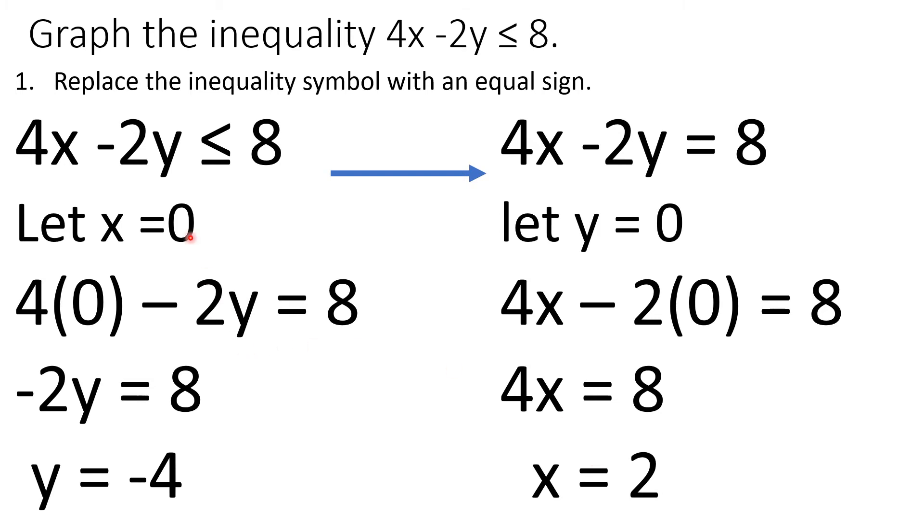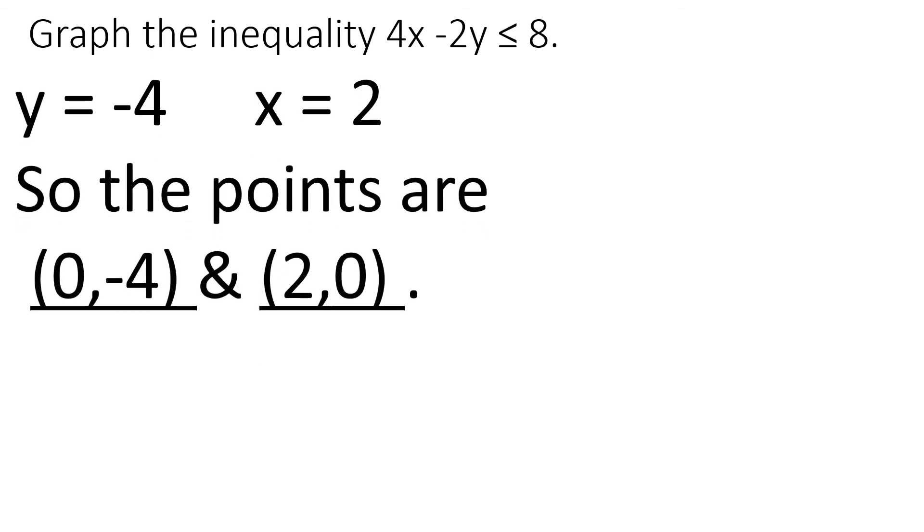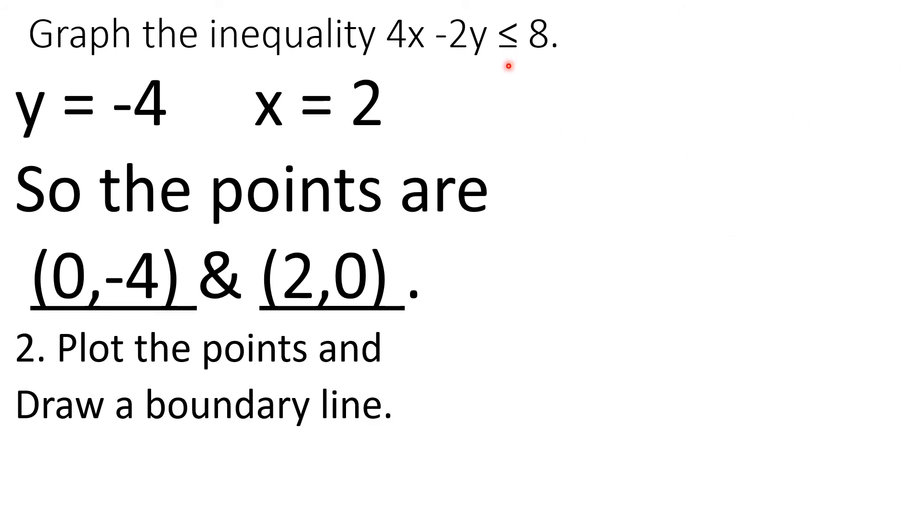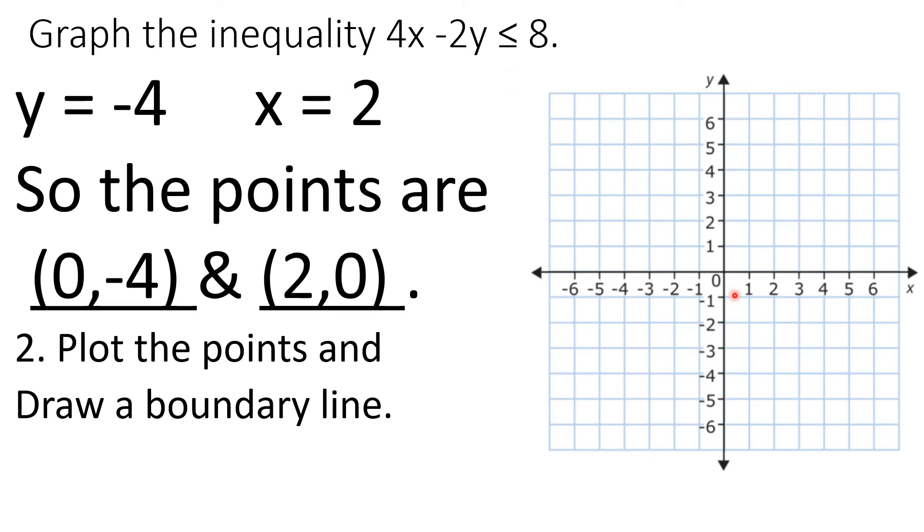So if x is 0, y is negative 4. So 0, negative 4. If y is 0, x is 2. So 2, 0. Now plot the points and draw a boundary line. If you observe, less than or equal to, meaning solid line. But if it's less than only, broken line. So 0, negative 4. 2, 0. Solid line. It's solid because it's less than or equal to. When there's equal to, it's solid.